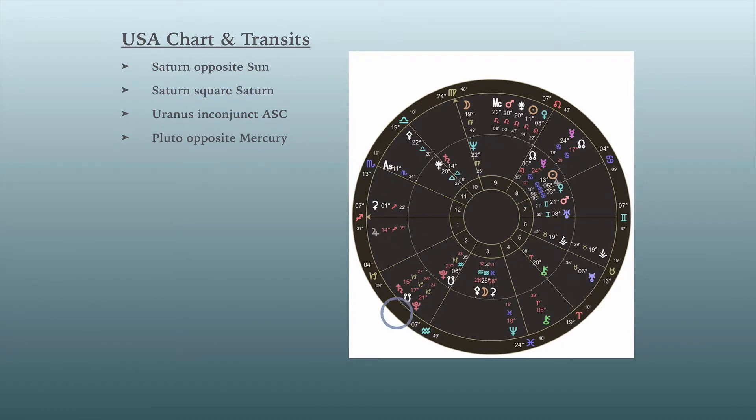We have Saturn actually squaring its own position. So it's kind of doubling up on the Saturn pessimistic, slow, discouraging, heavy sort of energy. We have Uranus inconjunct the ascendant, which is becoming more exact. Inconjunct is 150 degrees. Here's the ascendant of the U.S., at least the one I use, seven Sagittarius.